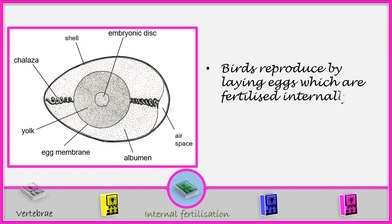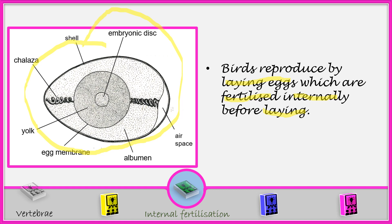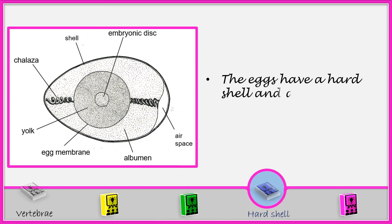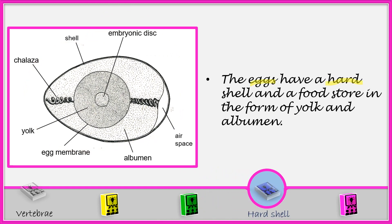Birds reproduce by laying eggs which are fertilized internally before laying. Therefore birds undergo sexual reproduction because they lay the egg which is already fertilized. The eggs have a hard shell and a food store in the form of yolk and albumen.